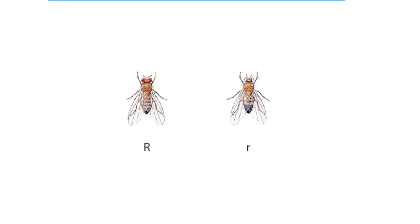In fruit flies, red eyes are dominant over white eyes. Eye color is a sex-linked trait in fruit flies. This means that the gene is on one of the sex chromosomes, X or Y.